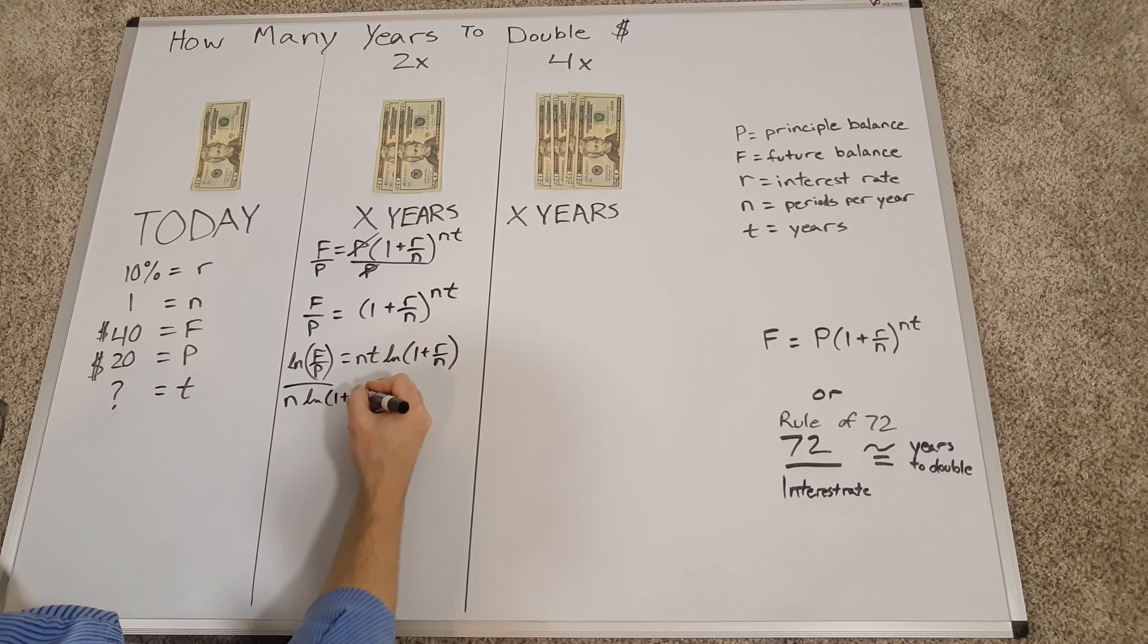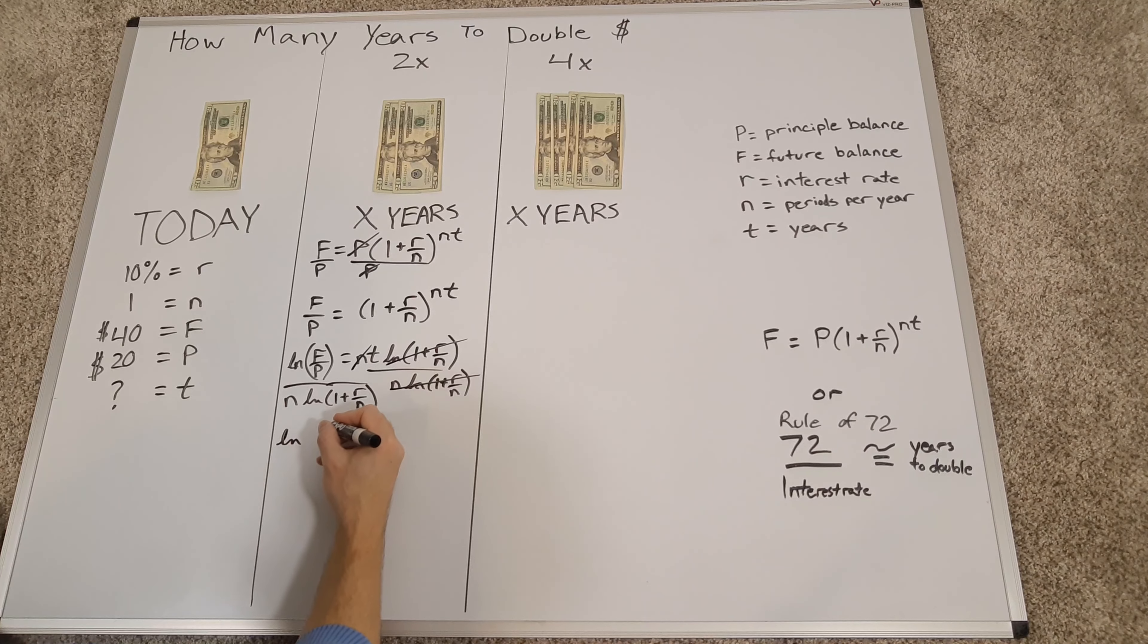That crosses this out and this out and those out. So now we have the natural log of f over p over n natural log of 1 plus r over n is equal to t.